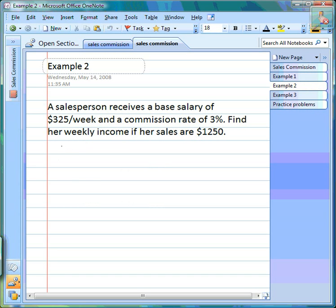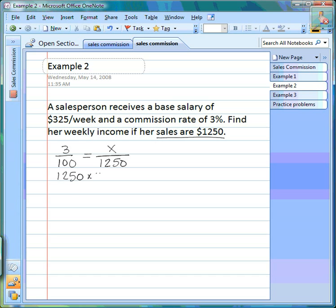So if we set up our proportion, use our percentage first, and then we know her sales were twelve hundred dollars, so her total sales goes on the bottom, and we're going to solve for how much she made in commission. Set it up to solve it—she has a commission of $37.50.